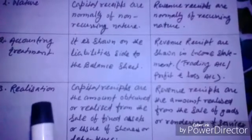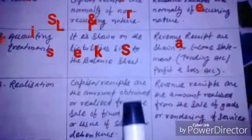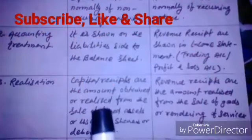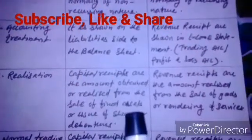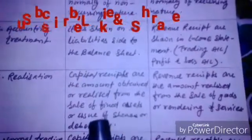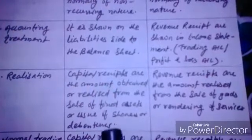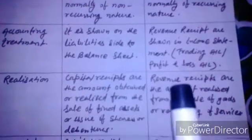The third basis of distinction is on the basis of realization. Capital receipts are the amount obtained or realized from the sales of fixed assets or issue of shares or debentures, whereas revenue receipts are the amount realized from the sales of goods or rendering of services.